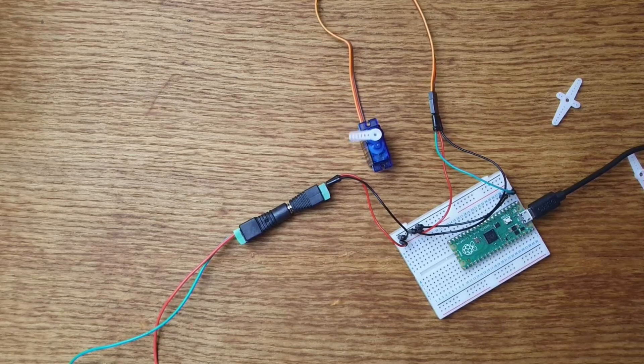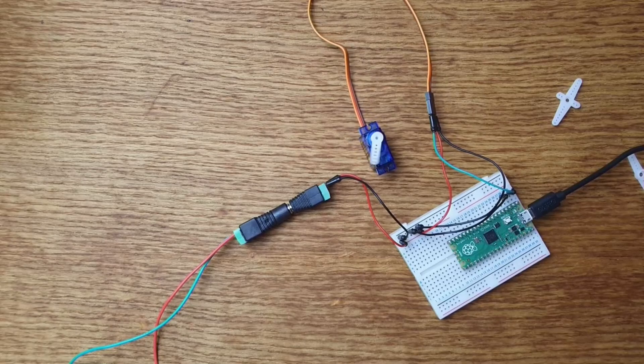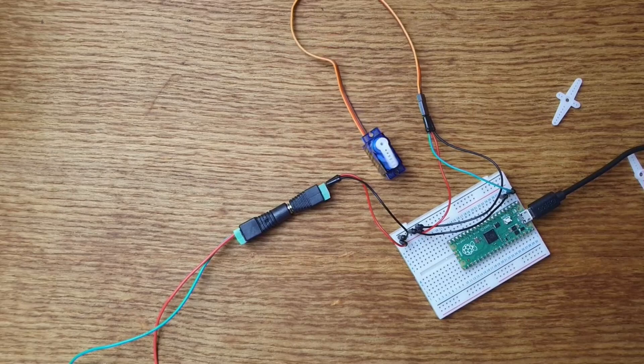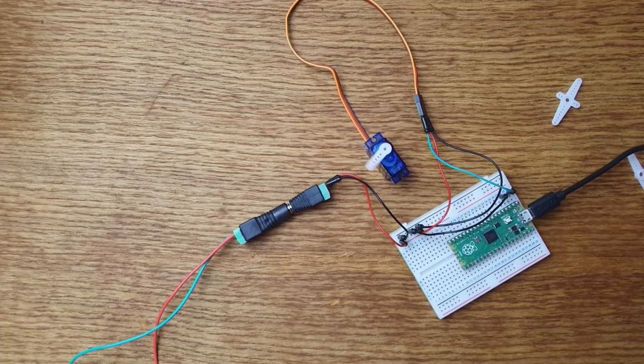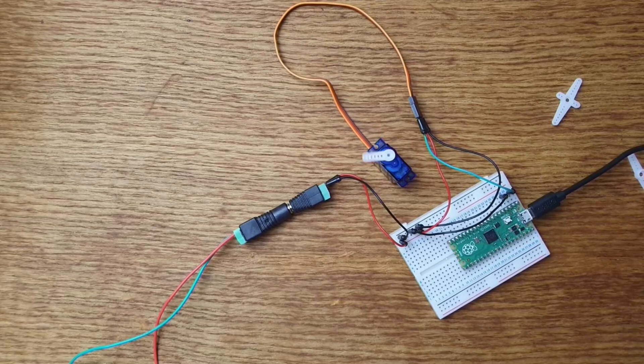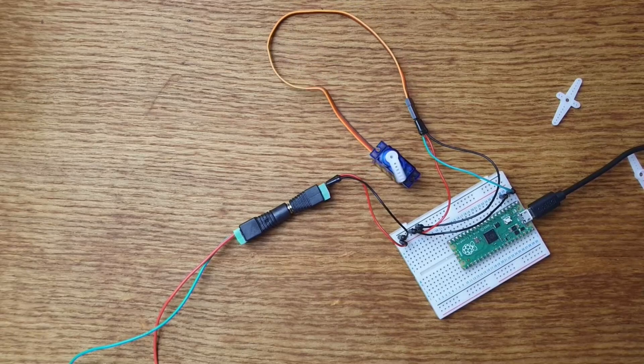And when you buy a servo, it'll come with a selection of little plastic attachments, different shaped horns that you can connect to it and use to interface with various projects. And you can, of course, put a gear wheel or something on there if that's the appropriate thing to use for your application.